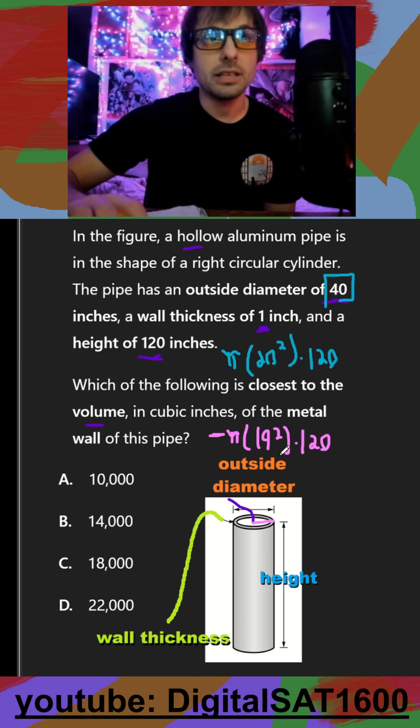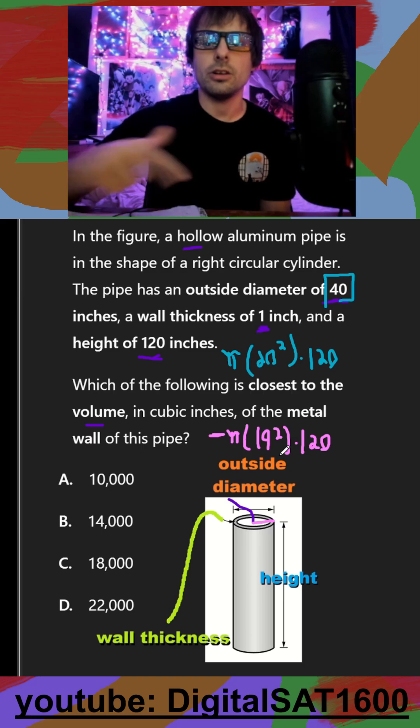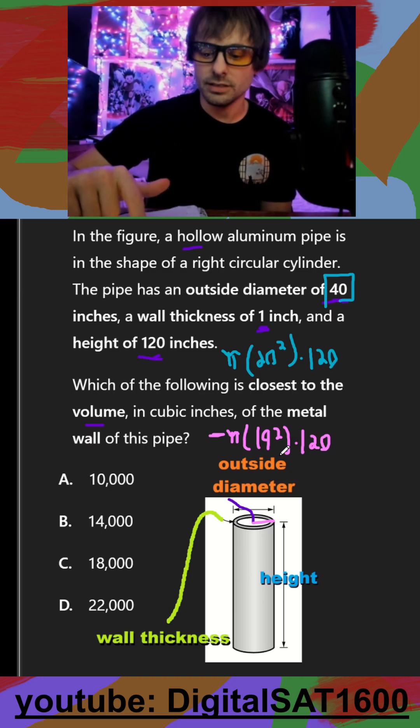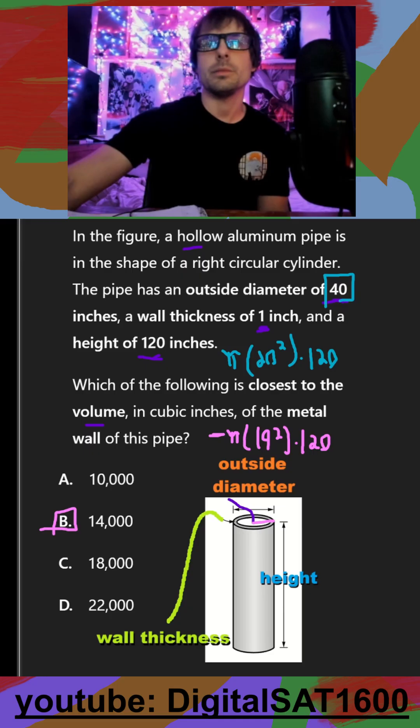So if I calculate the volume of the bigger cylinder, it's going to be 20 squared times pi times 120. That's like 150,000. And all I have to do is subtract the smaller cylinder. So that's going to be pi times 19 squared times 120. And I'm getting like 14,700. The answer choices are pretty far apart, so it's going to be B.